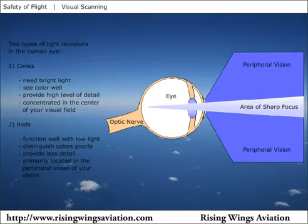Your eyes contain two different types of light receptors, called cones and rods. The cones do a good job of providing sharp detail and good color depth, however cones require bright light for their operation. Rods are adapted to work in low-light conditions but provide little detail or color depth. The cones are concentrated in the center of your visual field, providing the sharp, high-color area of vision used in bright-light conditions. The rods are distributed elsewhere in the eye, providing peripheral and night vision.